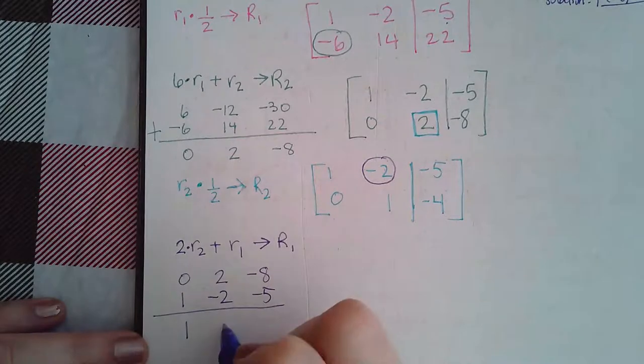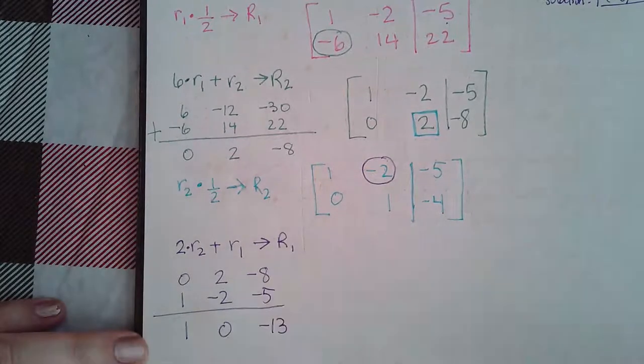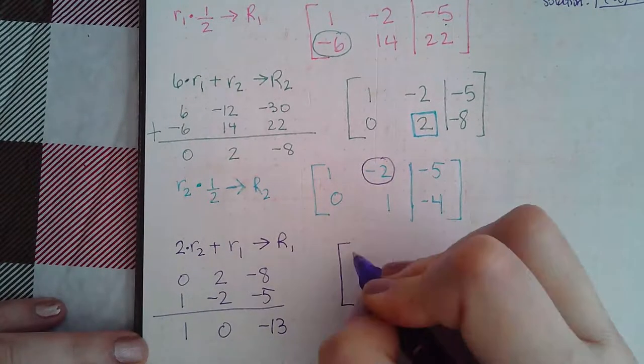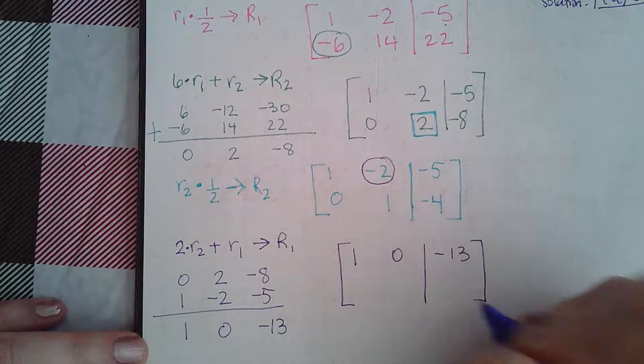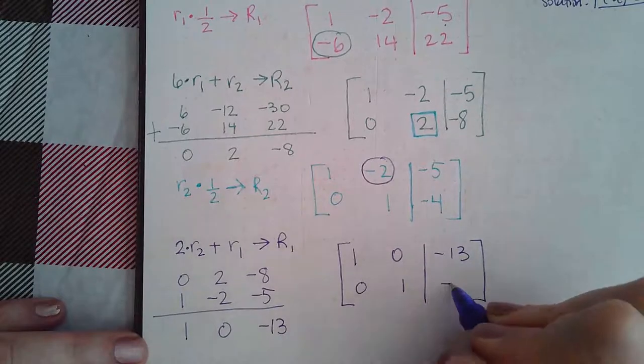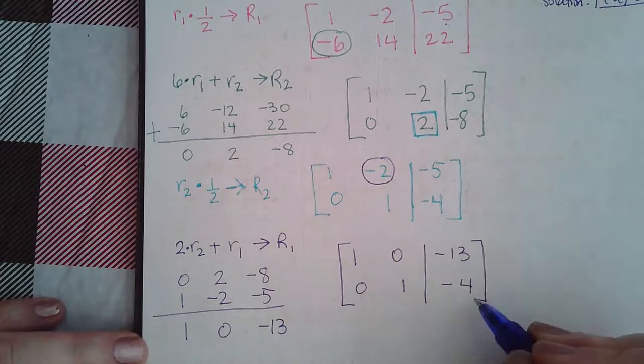This becomes 1, 0, and negative 13. So, then my row 1 becomes 1, 0, and negative 13. My bottom row does not change. It stays exactly as it was before.